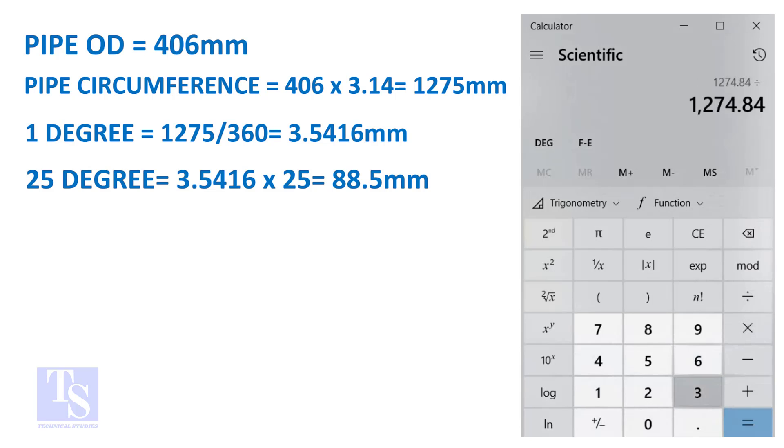Finally, multiply the 1 degree arc length by 25. Now you have the arc length of 25 degrees. You can apply this formula to get the arc length of any degree.